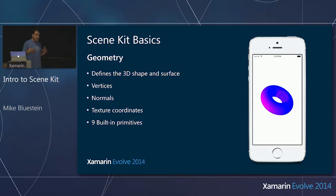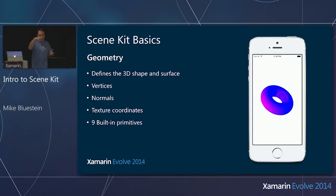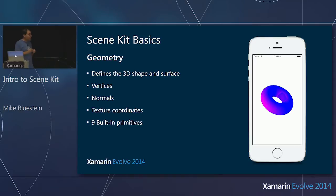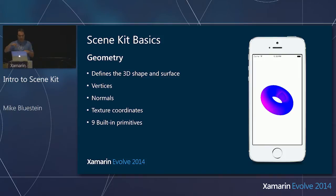If you're taking a visualization approach, these primitives will be your friends — you can start animating the geometry and doing cool things. For a casual game, you can envision putting some kind of material to make a torus look like an inner tube, or boxes that look like blocks. You can achieve quite a bit with all these primitives. There's also another way to take it further by bringing in 3D models.